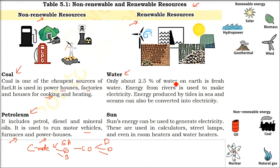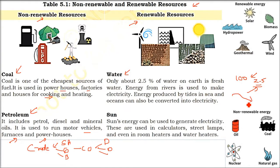Certain resources can be renewed, like water. However, only about 2.5% of earth's water is fresh water that we can drink or use, even though 75% of the earth is covered by water. The energy from rivers — by making a dam — can be used for electricity. We also have tidal power from the tides, using turbines to convert tidal energy into electricity, though it requires very powerful tides.